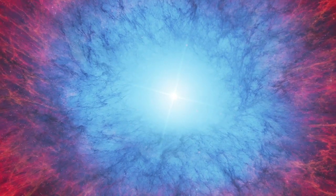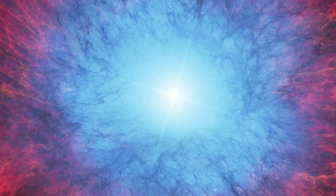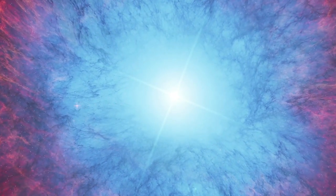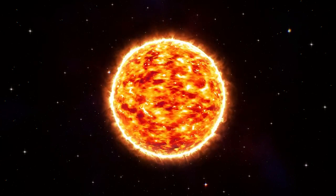After its red giant phase, the sun will collapse. It will keep its enormous mass with the approximate volume of our planet. When this happens, it will have become a white dwarf.